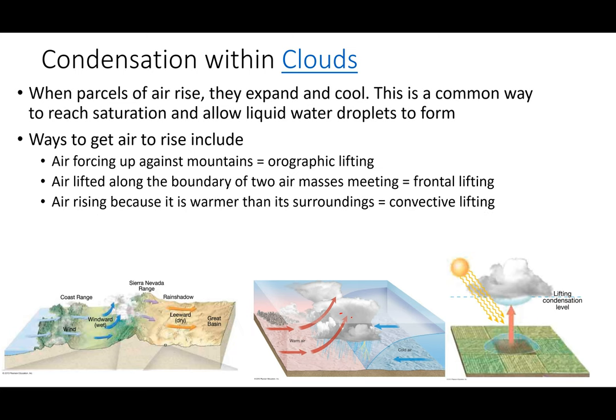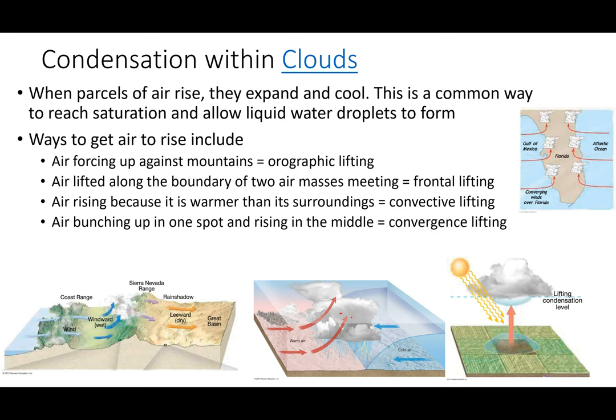Here's a third mechanism — convective lifting. On a sunny day, a spot on the earth that's darker absorbs more heat, like wearing a dark shirt in summer. That darker region warms the air above it, and warm air rises — the old adage holds. This is convective lifting: warm air rises, expands, cools, and condensation forms. Those are three ways to get a chunk of air rising.